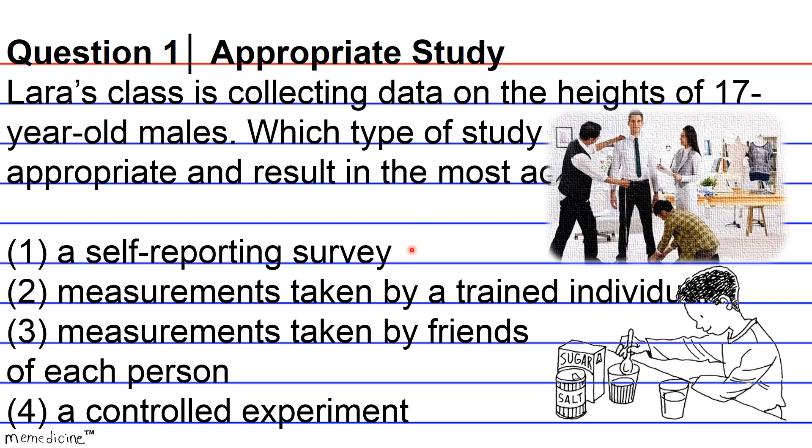Answer choice 1. Many people may not know their own heights precisely, so any self-reporting may actually be a guess. There is also a possibility that some might intentionally misrepresent and exaggerate their heights. Thus, this would probably not be the most accurate method.